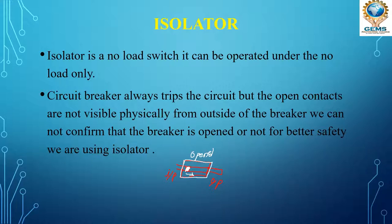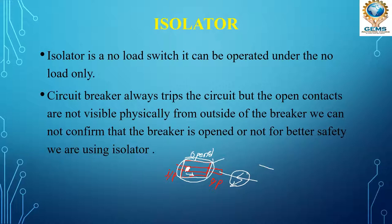But we don't know whether the circuit is opened or not, because it is enclosed in a chamber — it is closed in a box and not visible. If we want to repair or work on this line, we cannot do so with confidence because the contact position is not visible. This is the reason we keep in series one more device: the isolator.